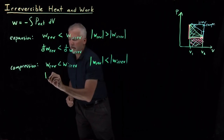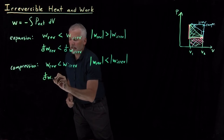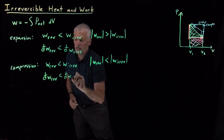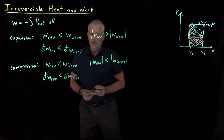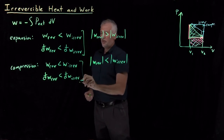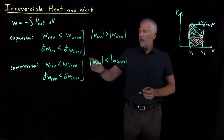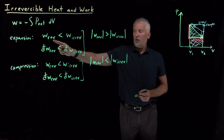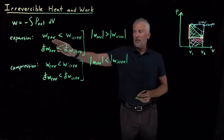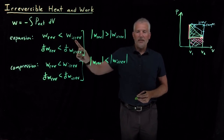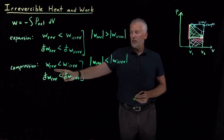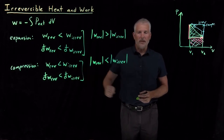Let me write down the differential form of that expression: dw_reversible is always going to be less than dw_irreversible. The convenient thing is that both the expansion and compression cases tell us the same thing. Numerically — without worrying about magnitudes, just the value of the numbers including positive and negative signs — reversible work is always less than irreversible work, regardless of whether we're doing an expansion or a compression.